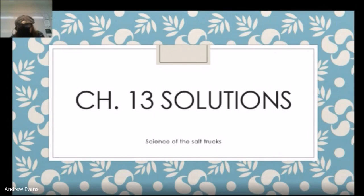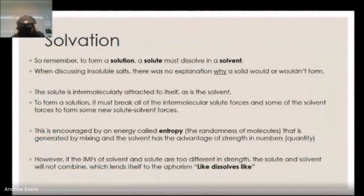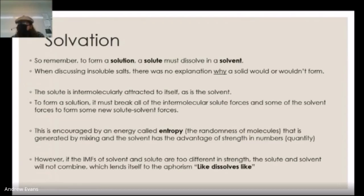Straight into Chapter 13. This is basically looking at solutions and what's going on, and eventually getting into colligative properties. There's going to be some tricky math here — try to deal with it a bit at a time. Remember these simple terminology: we have a solution, which is what happens when a solute dissolves in a solvent. The solute is the thing that must be dissolved; the solvent is the thing that does the dissolution. This happens when atoms fully surround the solute and separate them.